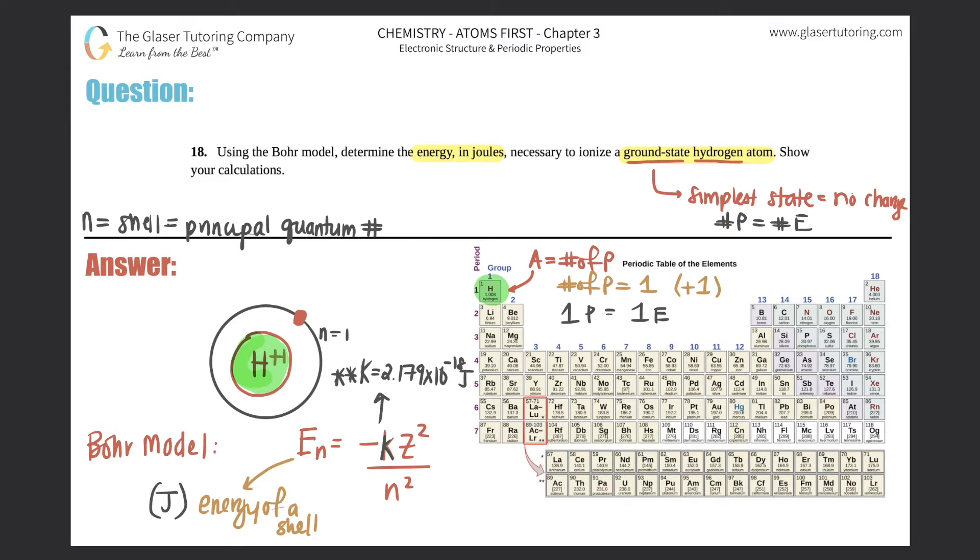Z is called the nuclear charge. It's just a fancy way of saying the charge of the nucleus. So nuclear charge, charge of the nucleus, whatever is inside the nucleus with the protons, that's what the Z number is going to be. And the N represents the shell number of where the electron is found.